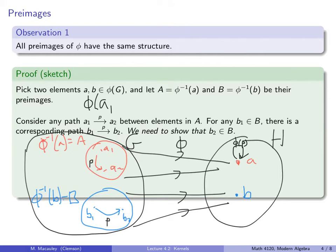Here is a key observation. Because the kernel is always a normal subgroup, given any homomorphism phi from G to H, we can always form the quotient group G mod the kernel. This observation is so important that it will lead us to what is called the fundamental homomorphism theorem, which is the topic of the next lecture.